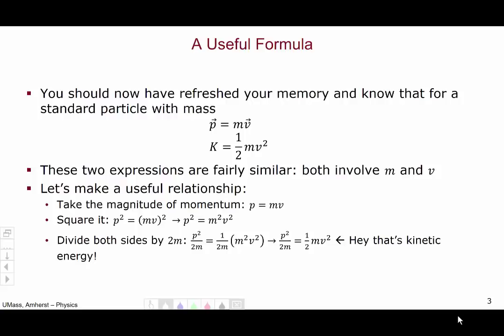So now you have p squared over 2m is equal to one-half mv squared. Which, hey, that's the kinetic energy. So the big punchline is that the kinetic energy of a particle with mass is equal to the magnitude of its momentum, p, squared, divided by 2m.